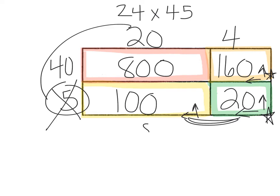With that, you then take those and add them up. So we have 800, 100, 160, and 20. Nothing in the ones. 6 and 2 is 8. 8, 9, 10. So 24 times 45 is 1,080.